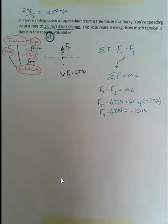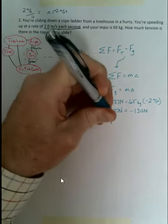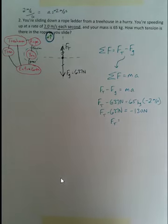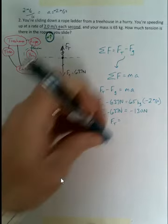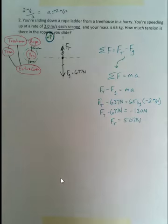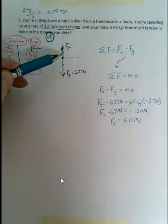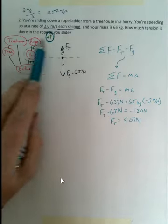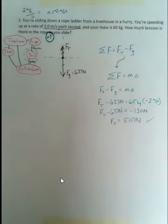Now I can solve for tension. Adding 637 newtons to both sides: 637 N + (−130 N) gives a tension force of 507 newtons. The tension in the rope is 507 newtons — question answered.